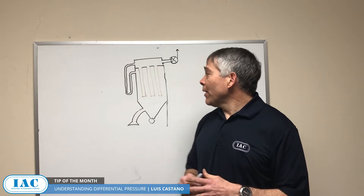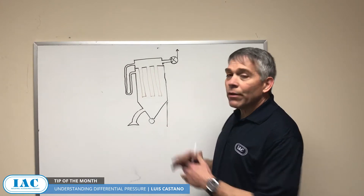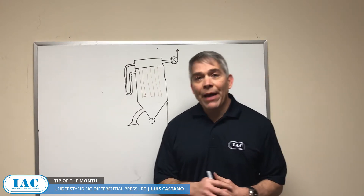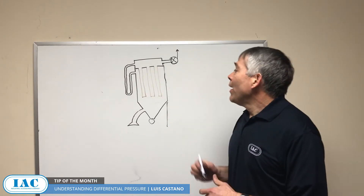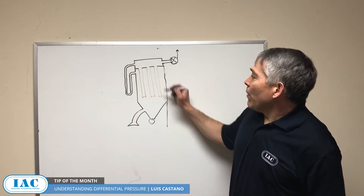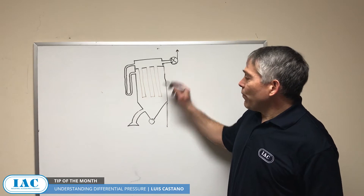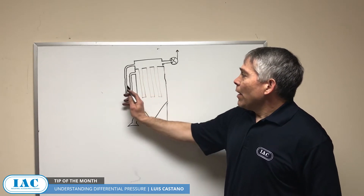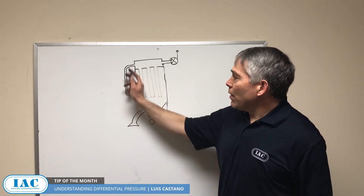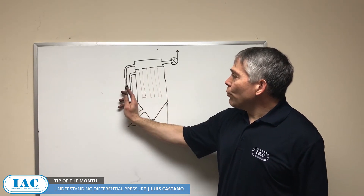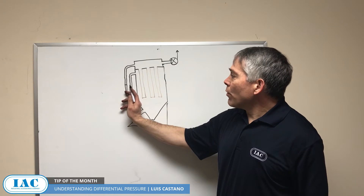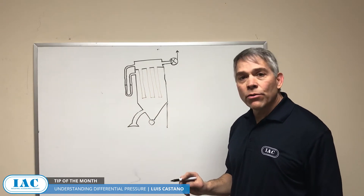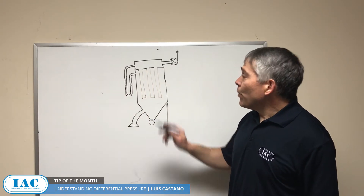To illustrate, I've drawn this very simple bag house. You have the filter bags, the fan, and the inlet. This is a clear water tubing. If you put water in and everything is off, the water seeks its own level.